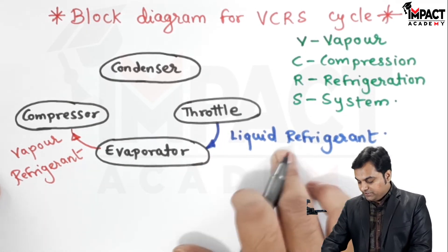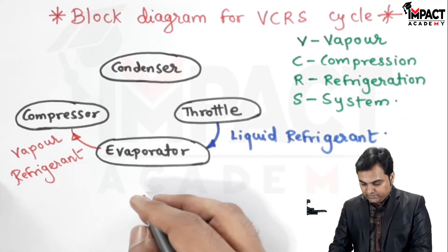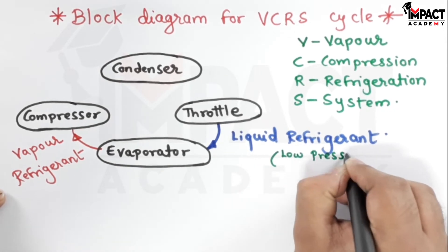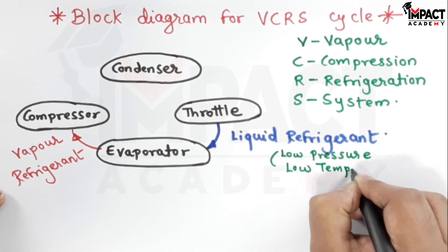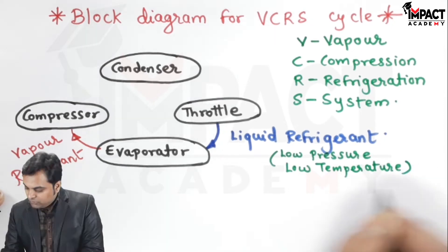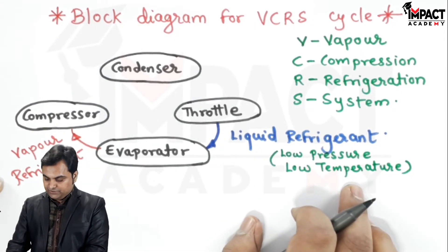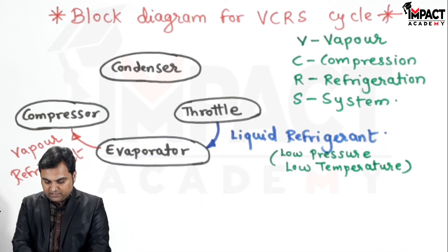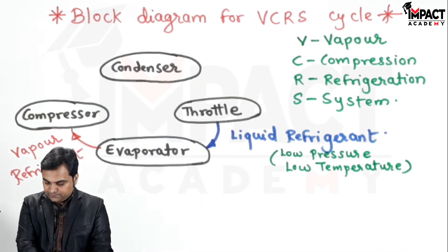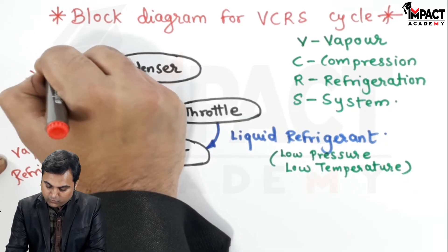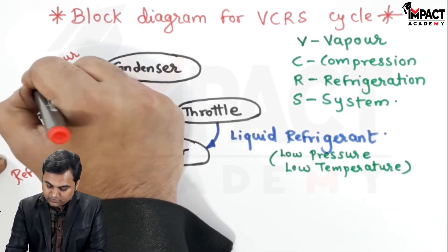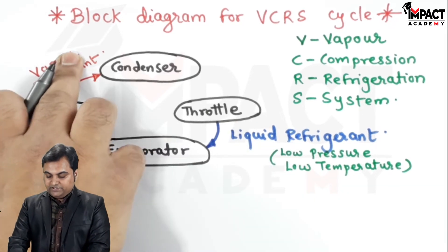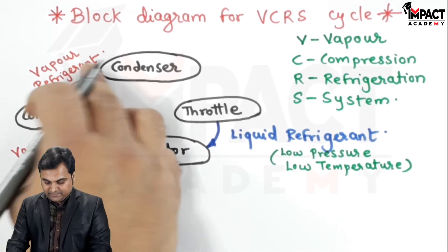When the refrigerant is entering the evaporator it is at low pressure and low temperature. Then when it comes out of the compressor after the compression process, we again have vapor refrigerant, but now it is at high pressure and high temperature.